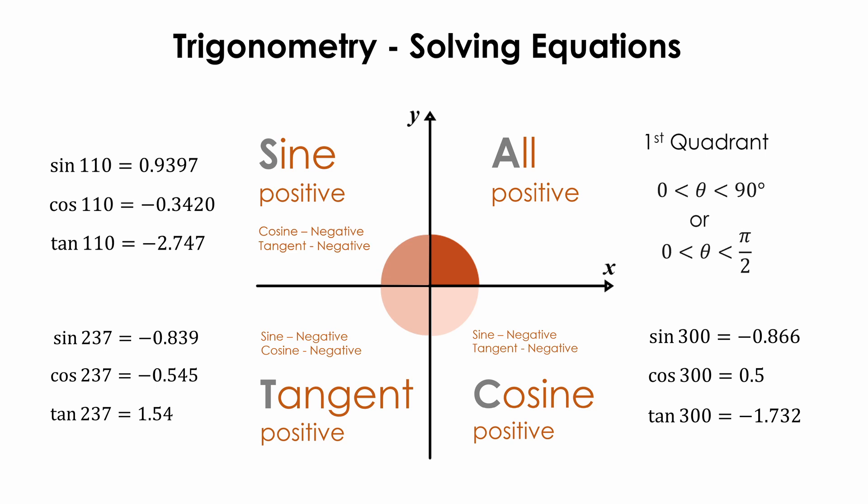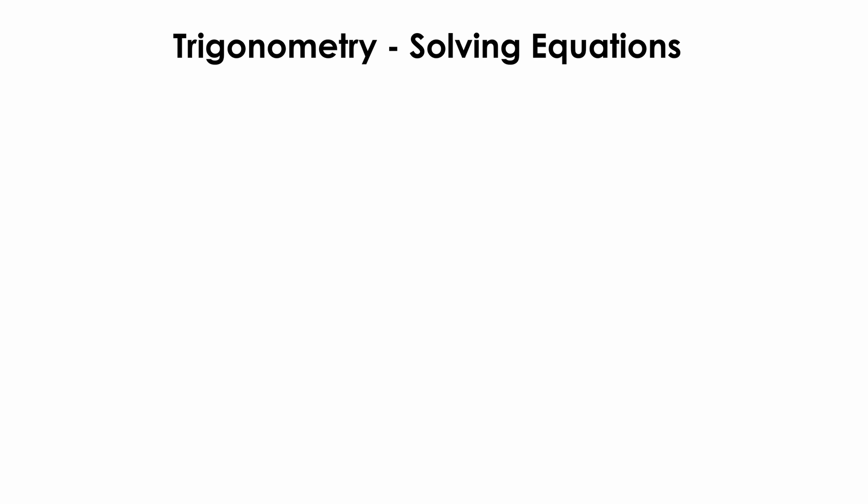Let us now go through some examples and learn how to solve trigonometric equations using the ASTC rule. In example 1, given that x lies between 0 degrees and 360 degrees inclusive, solve the equation sine x equals minus 1/4.